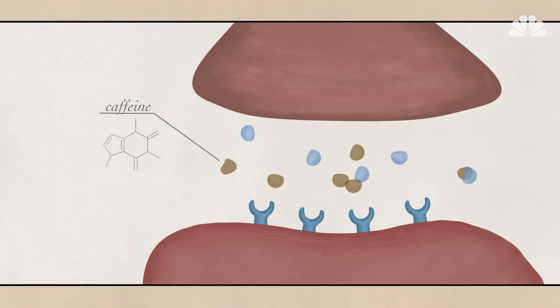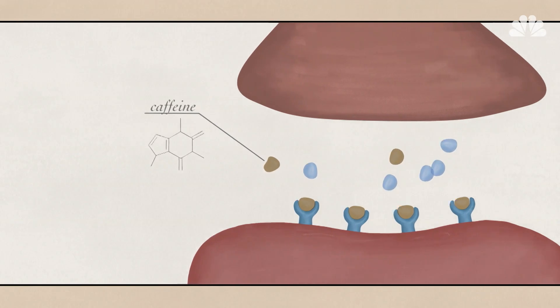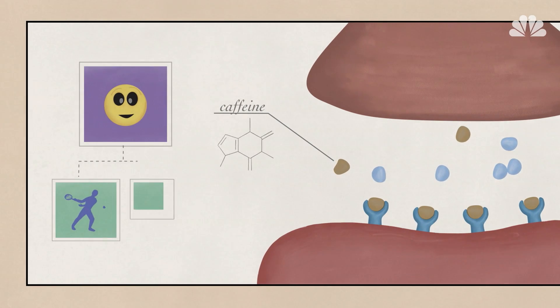But caffeine disrupts this natural process. It fits right into the receptors for adenosine, blocking the real thing from binding to brain cells. So instead of becoming tired, we feel more energetic and alert.